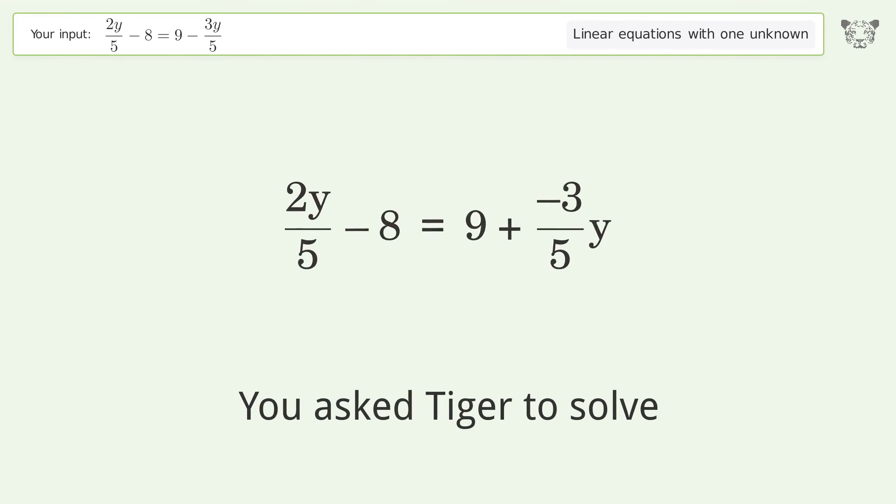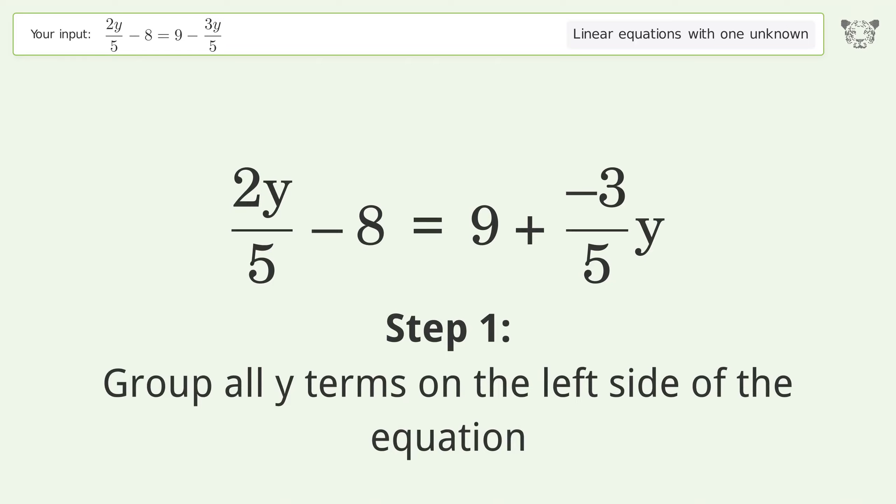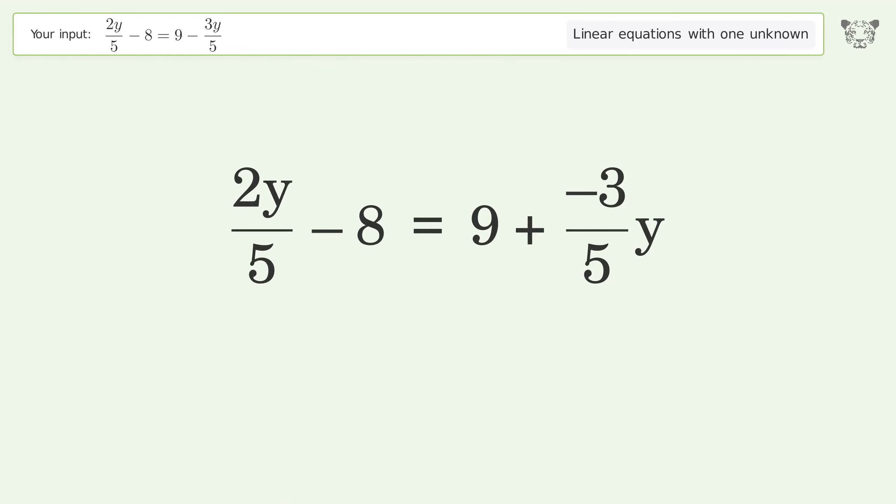You asked Tiger to solve this. This deals with linear equations with one unknown. The final result is y equals 17. Let's solve it step by step. Group all y terms on the left side of the equation. Add 3 over 5 y to both sides.